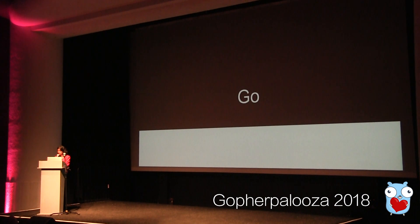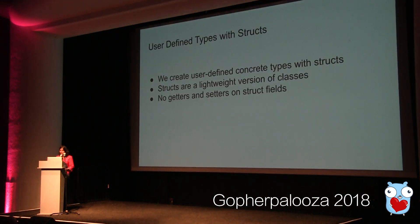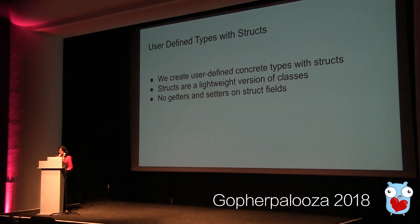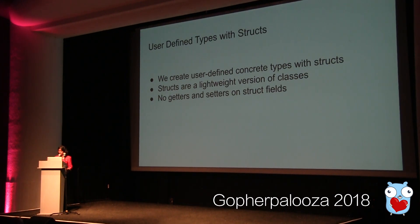We'll proceed with talking about what happens in the Go programming language. We have user-defined types with structs. The type system is an important feature of any programming language because it lets you organize your application data. In Go, structs are the way to create user-defined concrete types. A struct is a collection of fields or properties. Unlike other object-oriented languages, Go does not have a class keyword. Instead, we have structs, which are like a lightweight version of classes. A struct type is exported into other packages if the name of the struct starts with a capital letter. There are no getters or setters on these struct fields, and they can be accessed from the same package and from other packages if they start with an uppercase letter.